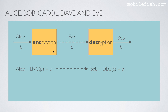Instead of a drawing, you can use this notation. Alice encrypts the plain text message to get the cipher text and sends the cipher text to Bob. Bob decrypts the cipher text to get the plain text message back.